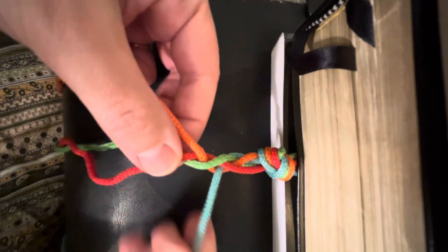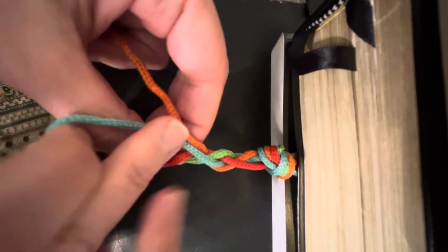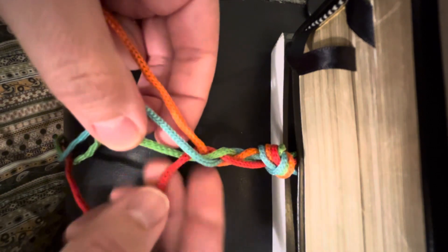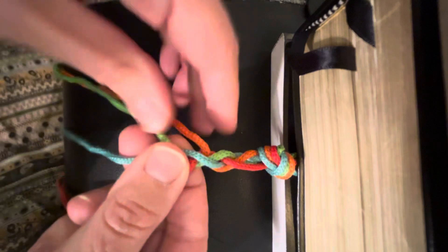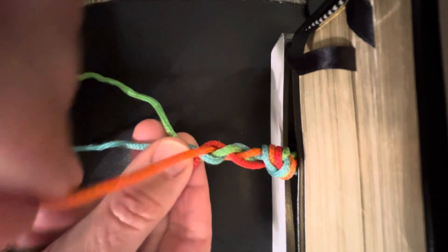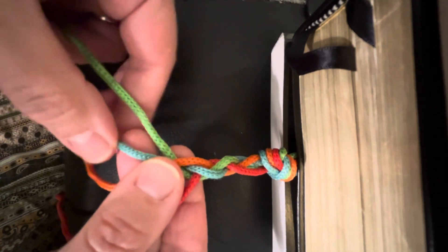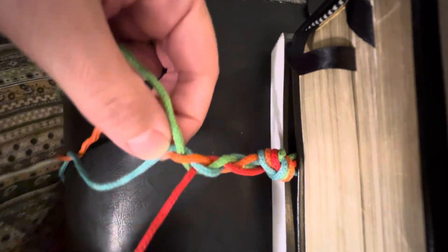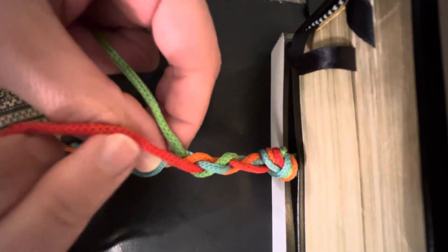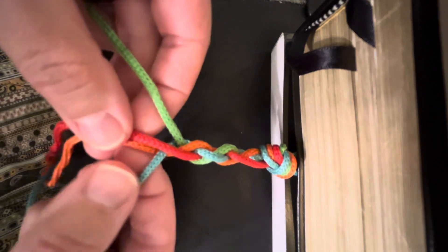Now blue's turn, over here, over the middle two. Green twists over blue. Now orange's turn, over here, over the middle two. Blue goes over orange.